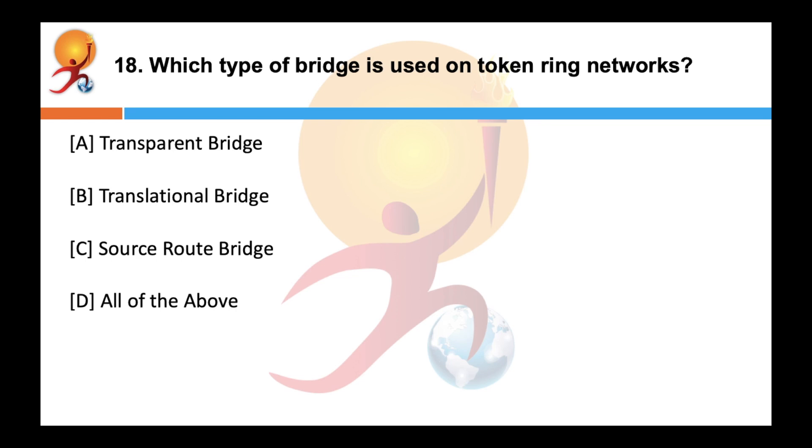Which type of bridge is used on token ring networks? Correct answer is all of the above. Source route bridge is used on token ring networks. Bridge derives the entire path of the frame embedded in the header of the frame and decides how to forward the frame throughout the network till it reaches its destination.